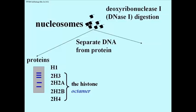At pH 7 — neutral pH, the pH in nuclei and cytoplasm — amino groups acquire a proton and become positively charged. So basic amino acids have positively charged side chains. It's reasonable that proteins that are going to associate with the very electronegative DNA molecule should in fact be positively charged at the same pH.